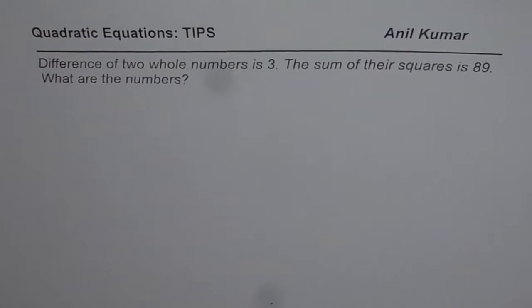I am Anil Kumar and here is a thinking question on solving quadratic equations. The question is: difference of two whole numbers is 3. The sum of their squares is 89. What are the numbers?